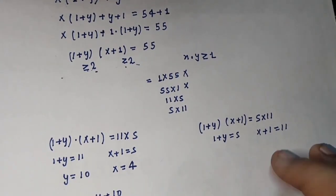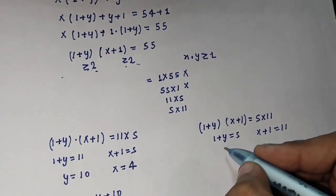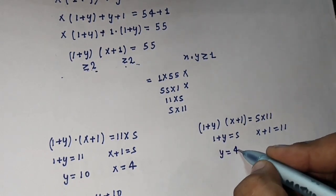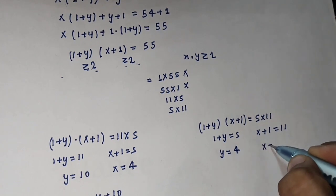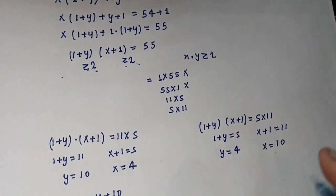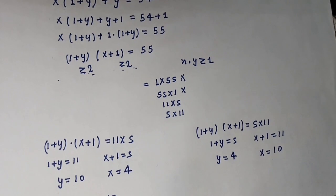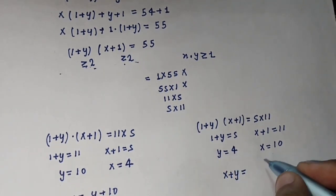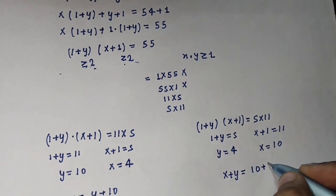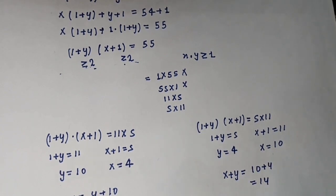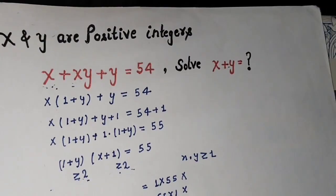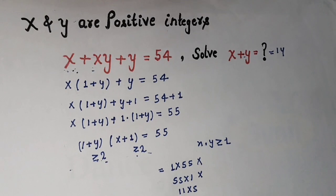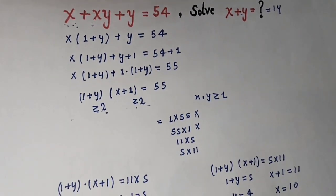Case 2: (1 plus y) equals 5 and (x plus 1) equals 11. Solving: y equals 5 minus 1 equals 4, and x equals 11 minus 1 equals 10. Therefore x plus y equals 10 plus 4 equals 14. We conclude that x plus y equals 14 — this is the final answer. I hope you enjoyed this video and understood the concept.